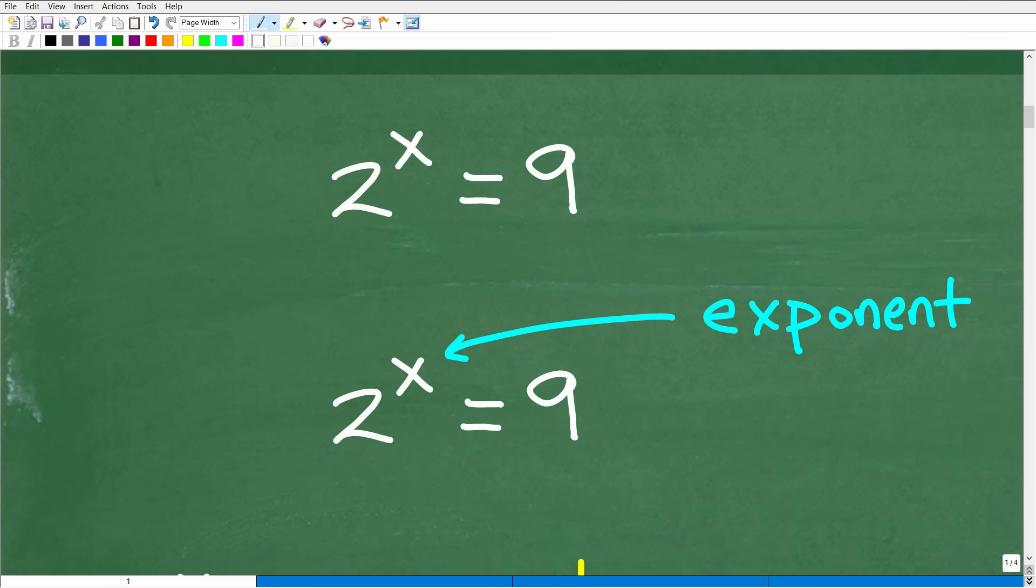Now, okay, so here is our problem. We have 2 to the x is equal to 9. And if you notice, we're looking to solve for the variable x, right? Well, where is the x located here? Okay, well, the x or the variable, the unknown value, is in the exponent, right? So when we have a power like 2 to the 4th power, 2 is the base, right? This is just a quick review. And this little 4 up here is the exponent. Okay, the entire thing is a power.